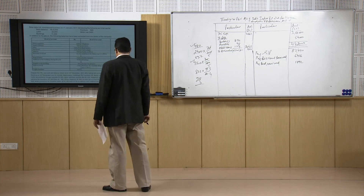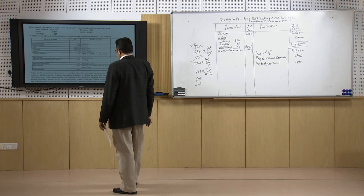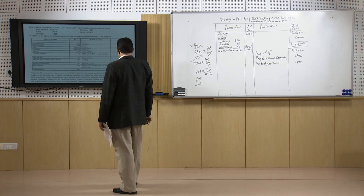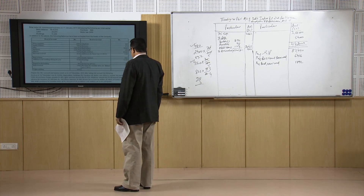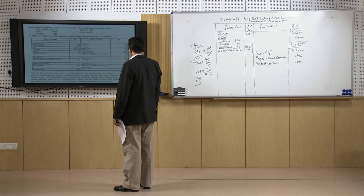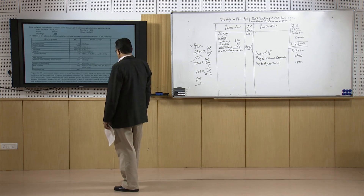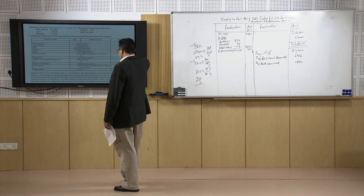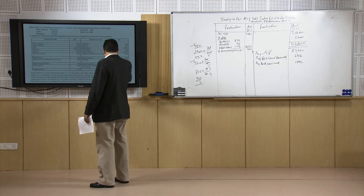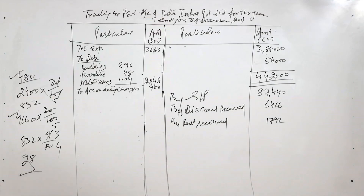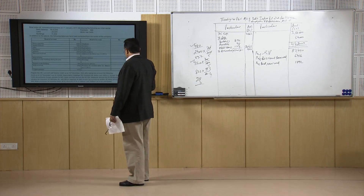Accountancy charges payable done. Light and fans already adjusted. Telephone already adjusted. Amount paid in advance for insurance done. Motor expenses taken into account. Income tax account is to be written off. Write off further bad debts of 888 rupees. Make provisions at the rate of 5 percent and discount of 2 percent on debtors and creditors are to be anticipated.